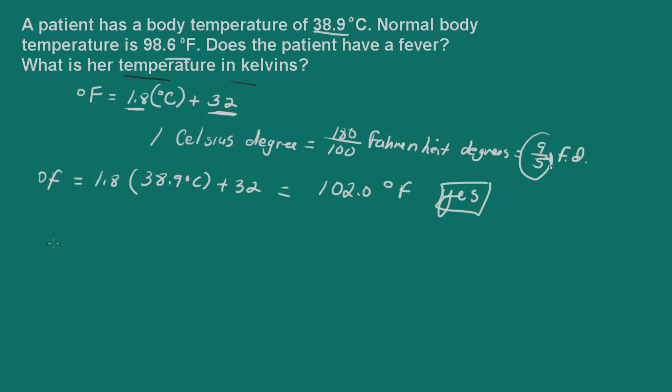But the zero point is different, and we call that absolute zero or zero Kelvin. And at zero Kelvin, that's equal to negative 273.15 degrees Celsius.